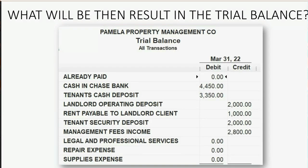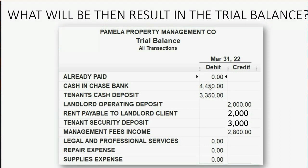What will be the result in the trial balance after we record that check two times? The rent payable to landlord will increase — because $1,000 of that check is the April rent — so that we now owe more to the landlords: $2,000. The tenant's security deposit payable will also increase by $1,000 and become $3,000. Because the $2,000 was physically deposited into the operating bank account, Chase Bank will increase by $2,000 and become $6,450.